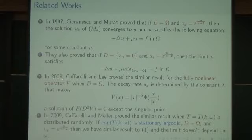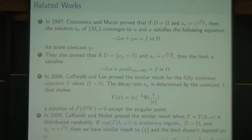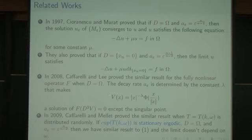In 2008, Caffarelli and my advisor Kiam Lee proved a similar result for the fully nonlinear operator F, homogeneous of degree one. In this case the decay rate a_epsilon is much more complicated compared with the Laplacian case, but it can be calculated by the constant gamma, where gamma is the homogeneity of this special solution.